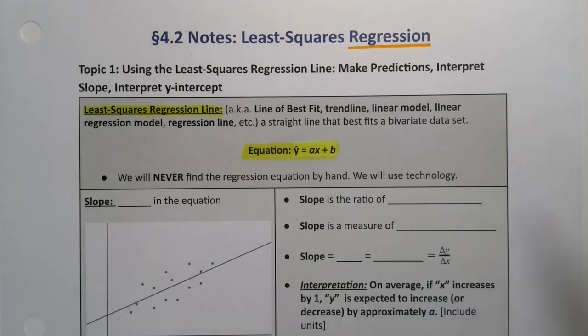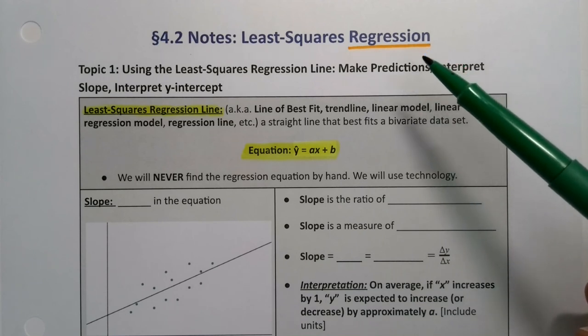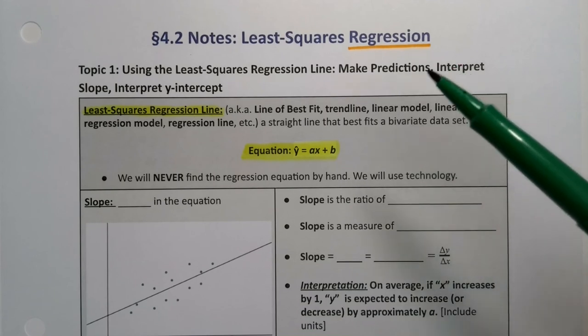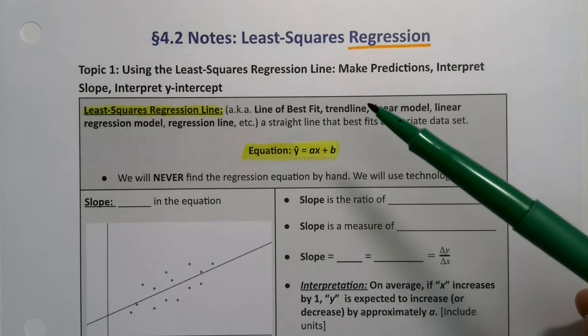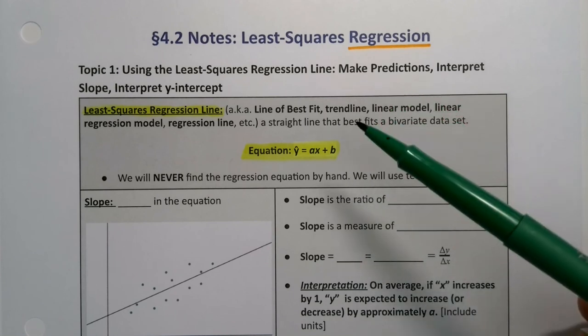We saw in section 4.1 that when we wanted to find the correlation coefficient, we needed to use regression on the calculator or in StatCrunch. This section is all about what that regression is and some of those other numbers the calculator or computer were finding for us. We're going to use that least squares regression line, use it to make predictions, and then interpret the slope and the y-intercept.